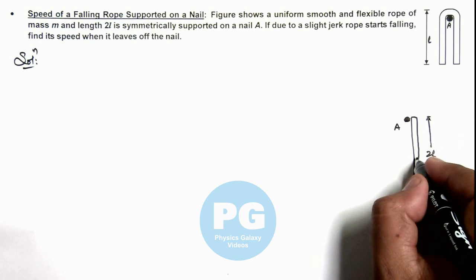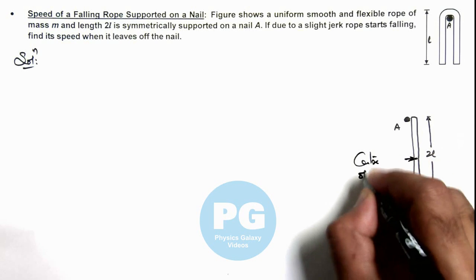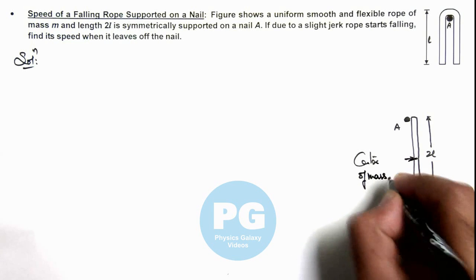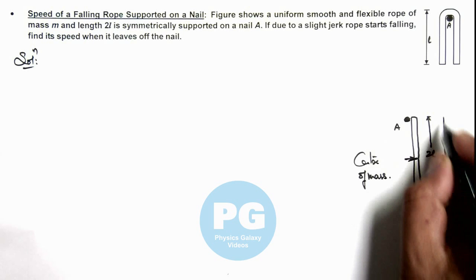If we have a look at its center of mass, this is the center of mass of the rope, which is at a distance l below the nail.